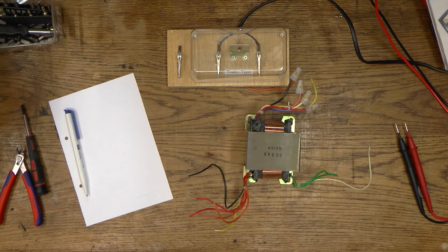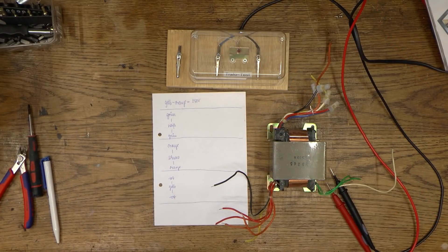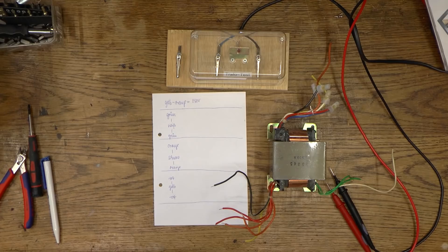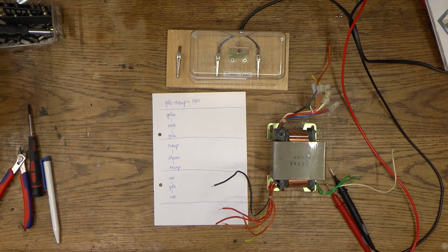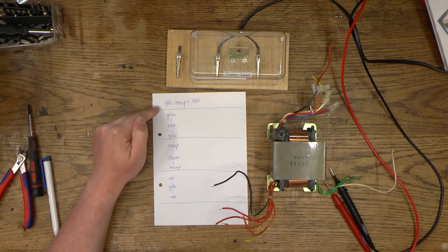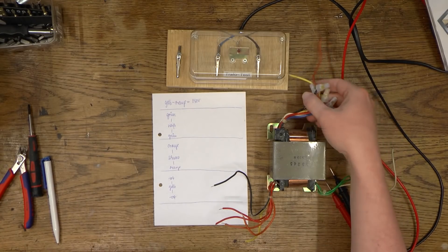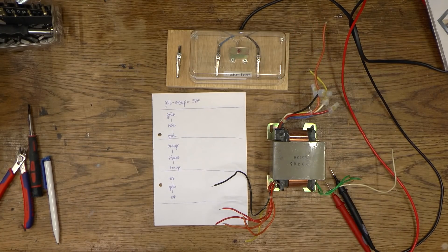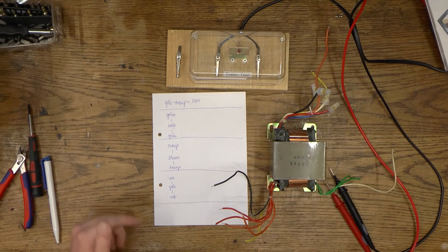So let me just take some notes right here. Everything has been written down and now this transformer really isn't that much of a mystery anymore. We have a primary winding. I'm just going to assume this mess is one primary winding. That's all that's interesting about that.